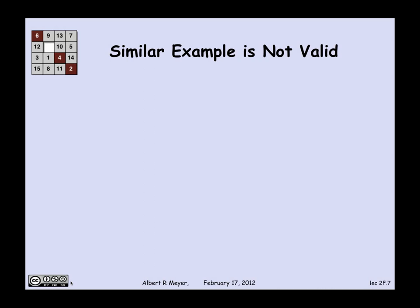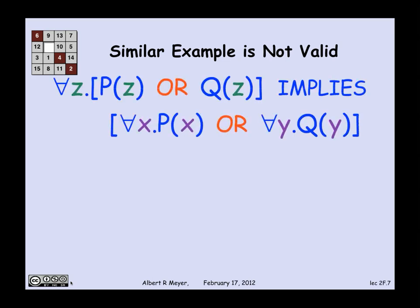Let's look at a similar example where it is possible to prove something. I can prove that something's not valid. Here's a similar looking formula. This one says that for every z, if P of z holds or Q of z holds, then for every x P of x holds or for every y Q of y holds. And this one we're going to show is not valid.